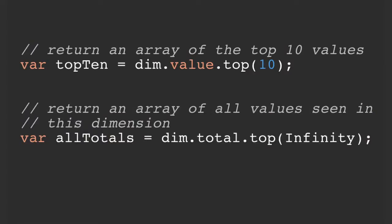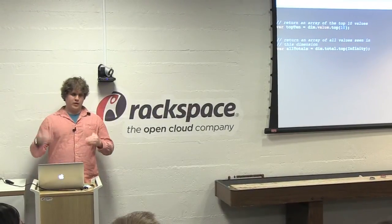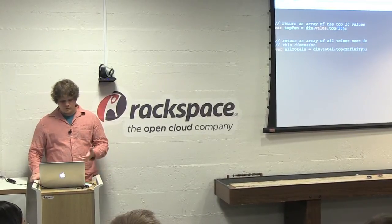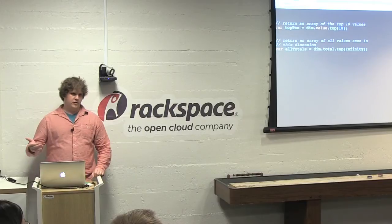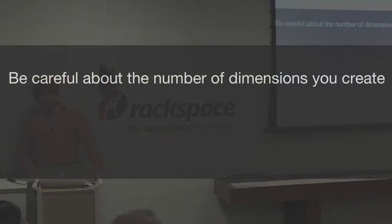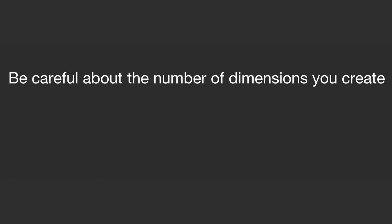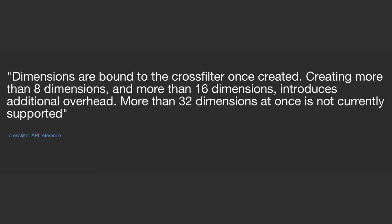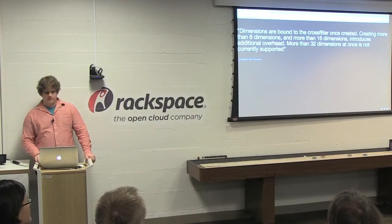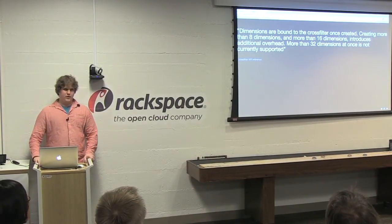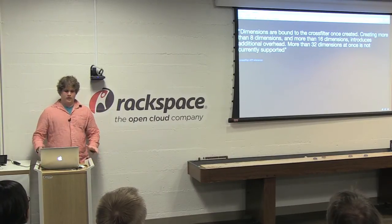Now that we can filter on these dimensions, how do you actually get the raw data you want? You can leverage top — you take a dimension and top will take the top k values, in this case 10, and just spit them out to you. It sorts on that dimension in some sortable fashion. And then to get all the dimensions, just pass in infinity. Be careful about the number of dimensions you create — dimensions are bound to the Crossfilter instance once created, so it's stateful. Creating more than 8 or 16 dimensions introduces additional overhead.